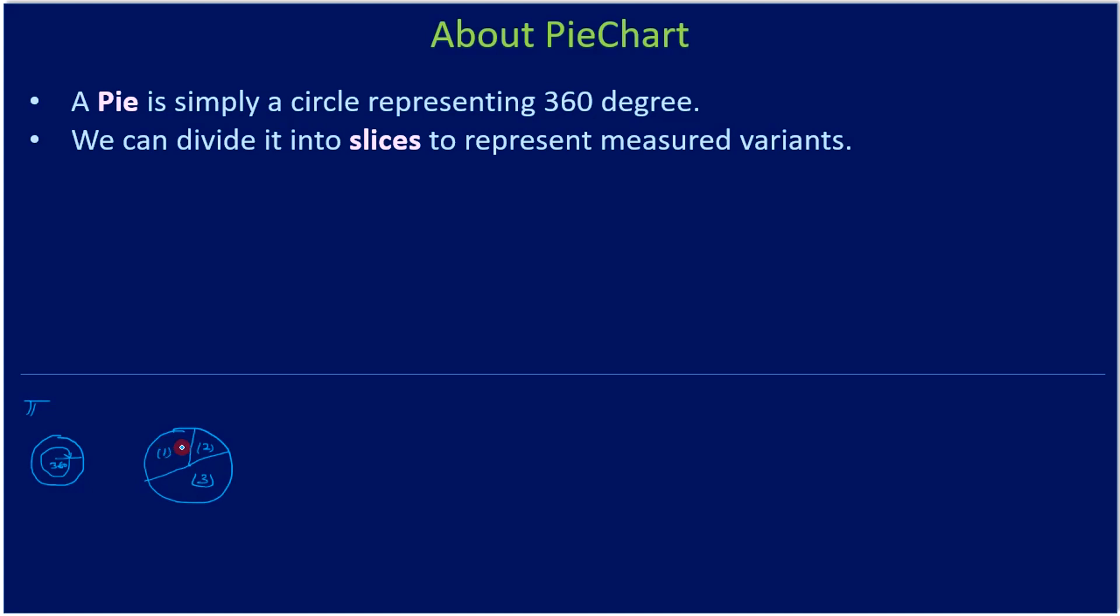Using the slice, we can represent a variant. For example, in the previous screenshot we saw sales of some products. Product one sold this much, product two, and this is product three. So 50 percent of sales is on product three, and the remaining is shared by product one and product two. Here we are representing the data in terms of slices.